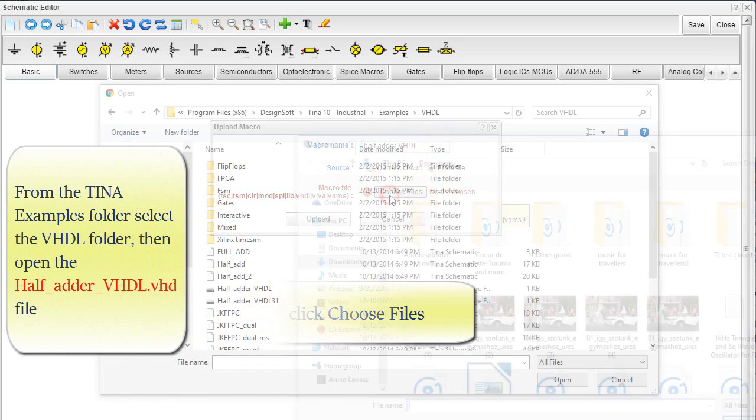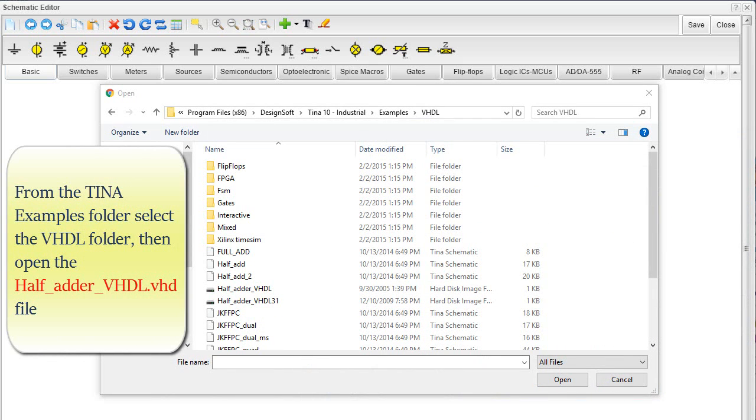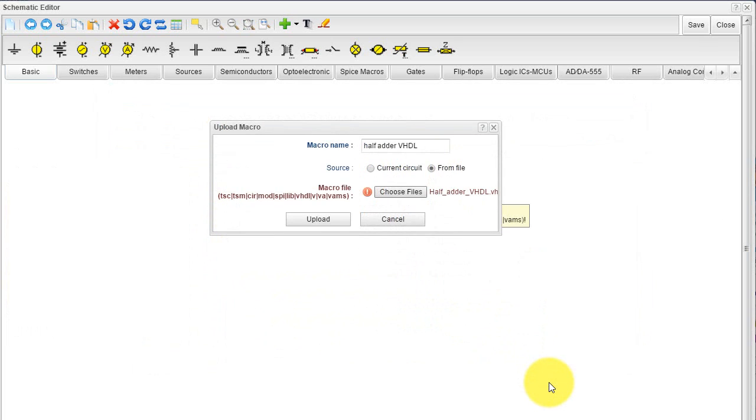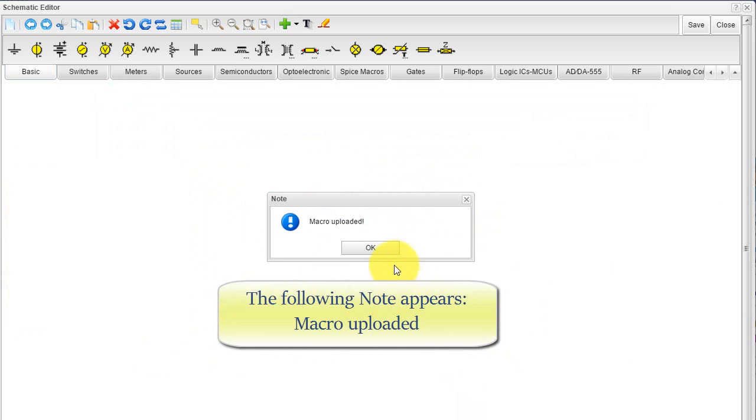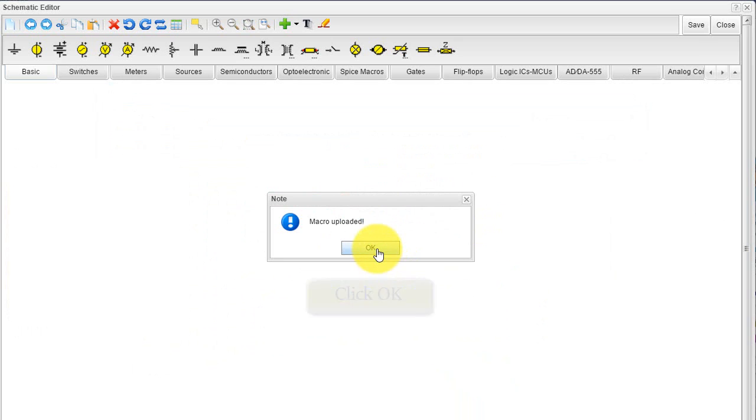Click Choose Files. From the Tina Examples folder, select the VHDL folder. Then, open the half_adder_VHDL.VHD file. Click Upload. The following note appears: Macro Uploaded. Click OK.